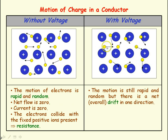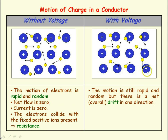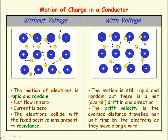We're now going to consider the motion of the electrons when there's a voltage, a potential difference across the conductor. The motion of the electrons is still rapid individually, and they're still moving randomly in different directions. But overall, there's a net movement — a net drift — in one direction, and this net movement gives us a current in the conductor. We say this net movement is a slow drift, and the electrons have a drift velocity, which represents their average distance travelled per unit time as they move along due to the voltage across the conductor.